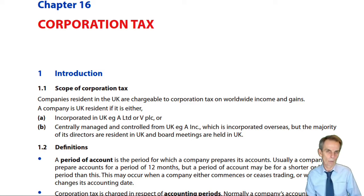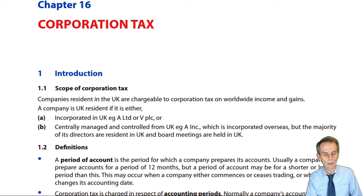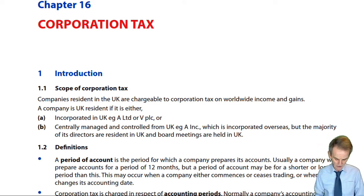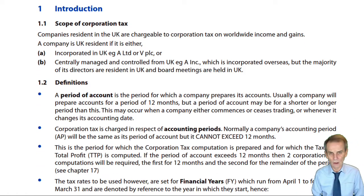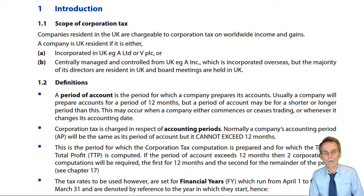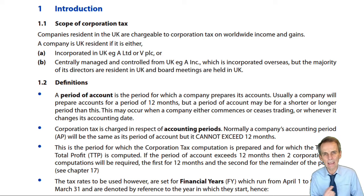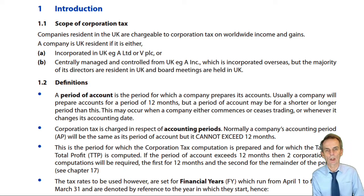Before looking at the corporate tax computation, there are three basic definitions we need to understand to underpin how we prepare it correctly. These definitions are at the beginning of Chapter 16. First, we establish who we're dealing with: companies resident in the UK. A UK resident company will be liable on its worldwide income and gains, and those worldwide income and gains will be subject to one tax: corporation tax.